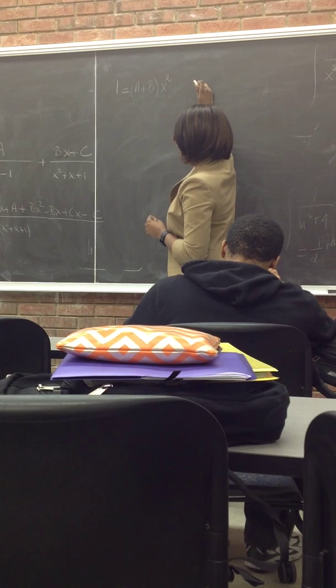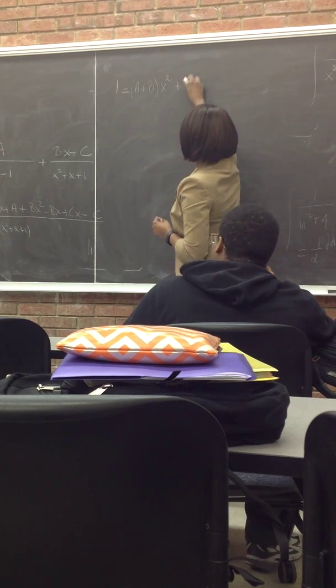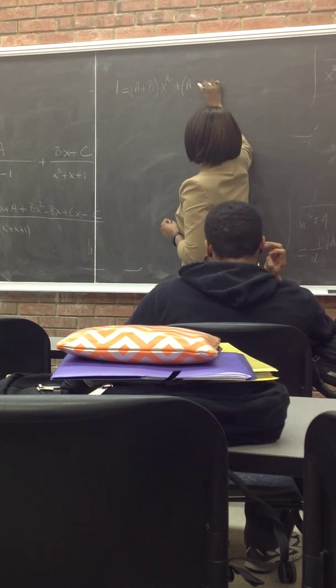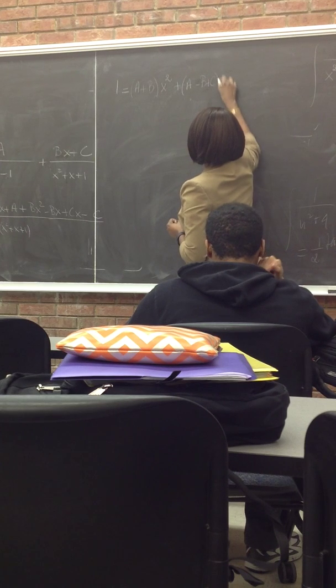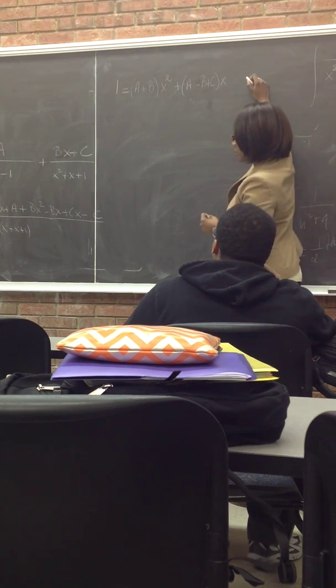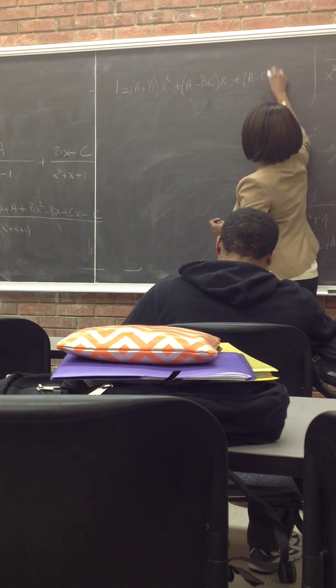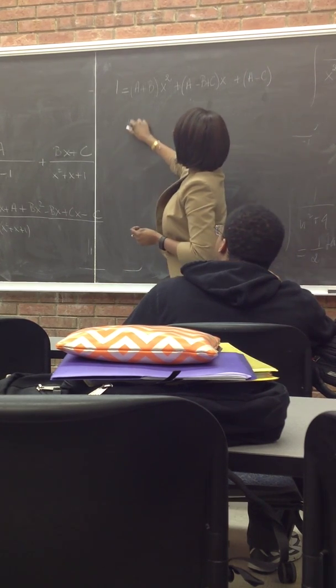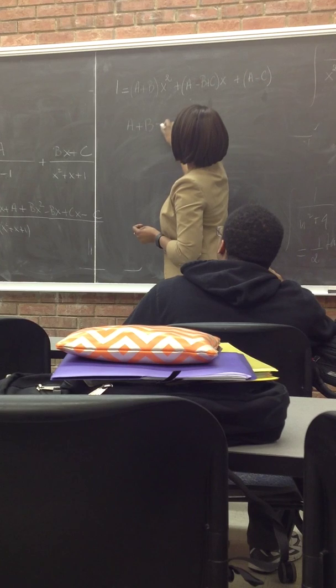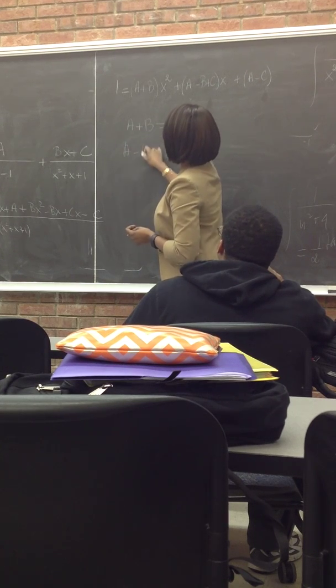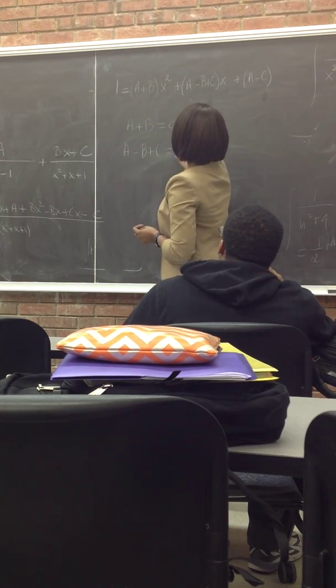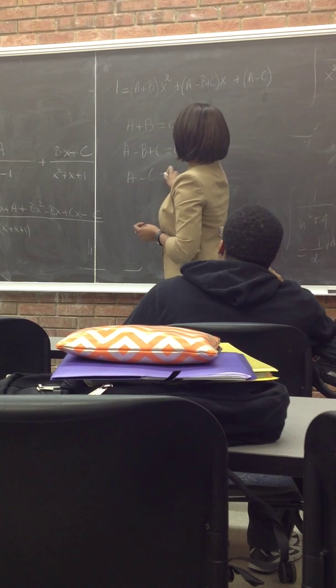The coefficient of x squared would be A plus B. The coefficient of x would be A minus B plus C. So we have A plus B equals 0, A minus B plus C equals 0, and A minus C equals 1.